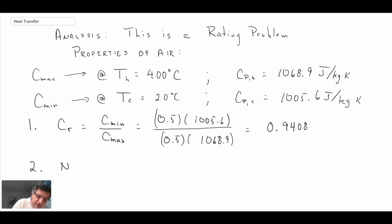Second step is to estimate the number of transfer units. Remember that is defined as being UA divided by C-min. When you compute that you get 1.59. Now that we have C_R and we have NTU, we can then go ahead and evaluate the effectiveness. We can do this in one of two ways.